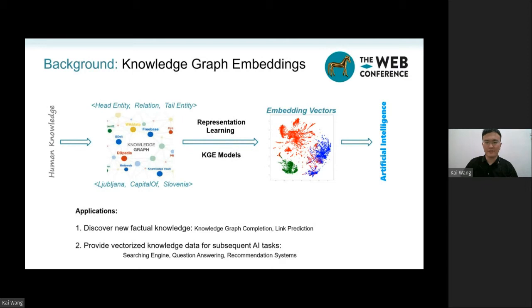Compared with Knowledge Triples, these learned embedding vectors can be easily processed by machines and can be utilized to discover the new factual knowledge or provide knowledge data to other AI tasks.